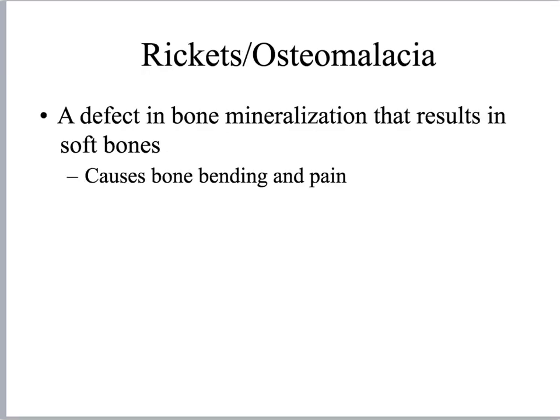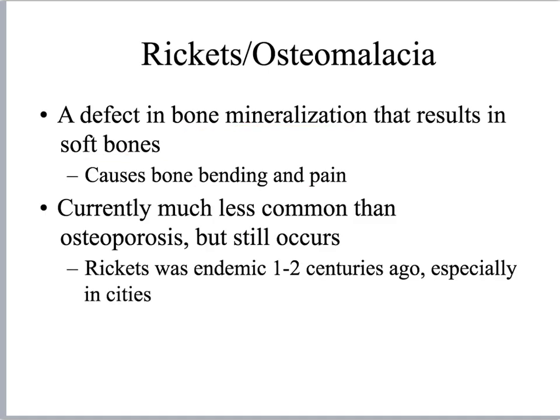Let's compare osteoporosis to rickets, also called osteomalacia in adults. Rickets is a defect in bone mineralization that results in soft bones — recall that osteoporosis causes hard brittle bones. Rickets and osteomalacia also cause bones to bend and cause bone pain, whereas osteoporosis is generally silent and does not result in bone pain until fractures occur. Rickets and osteomalacia are much less common than osteoporosis.